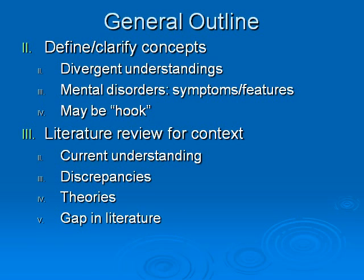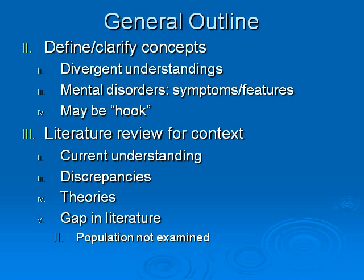Then comes the really key part you have to have if you're going to write a research paper: in your introduction, you need to identify some gap in the literature. You've talked about what we know, but there should be some piece that's missing — and you're going to point that out. It could be some population that hasn't been examined. For example, some phenomenon has been observed, but is it true for immigrants from mainland China? Nobody's looked at that yet, and maybe there's an important reason to. Similarly, maybe there's some variable that hasn't been examined — people have said A causes B, but nobody's looked to see whether that relationship is moderated or mediated by some other variable C.